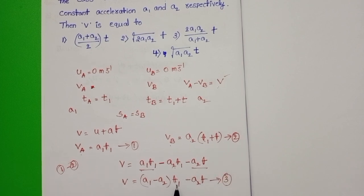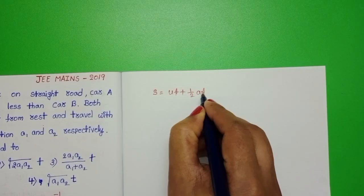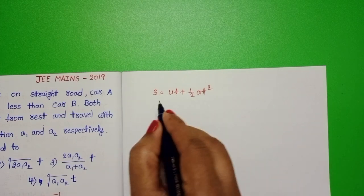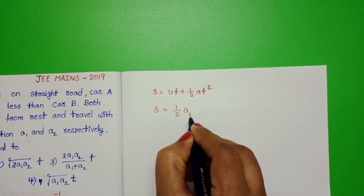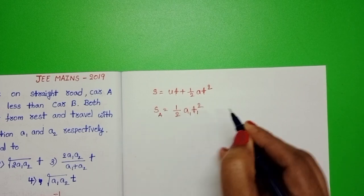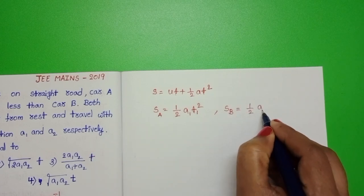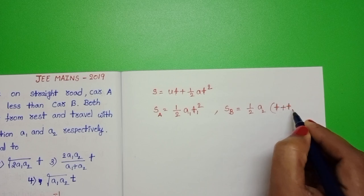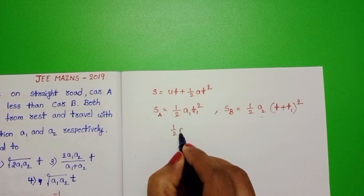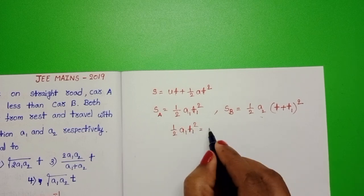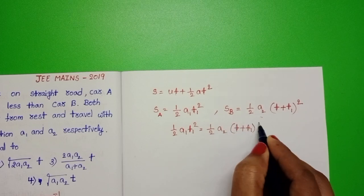Take this equation 3 and first find out T1 value. S is equals to UT plus half AT square. Distance traveled by the two cars is same only. S is equals to half A1 T1 square. And distance traveled by car B is equals to half A2 into T plus T1 whole square. Equate these two. Half A1 T1 square is equals to half A2 T plus T1 whole square.